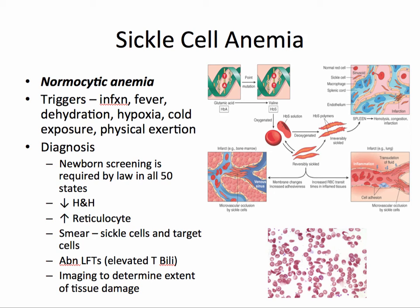Sickle cell anemia is an inherited hemoglobinopathy resulting from a point mutation that produces an abnormal morphology of the hemoglobin A molecule, which converts to a hemoglobin S molecule. In the presence of stressors such as infection, fever, dehydration, hypoxia, cold exposure, or physical exertion, these cells demonstrate their sickle shape and increase the viscosity of blood. These sickle cells stick within vessels and result in ischemia, producing a vaso-occlusive pain crisis.